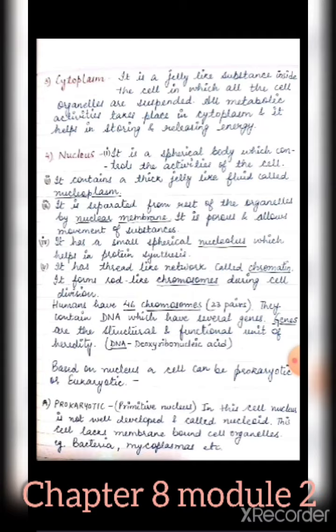There are 23 pairs of chromosomes — that is, 46 chromosomes total — present in humans. The thread-like network known as chromatin becomes thick during cell division and forms rod-like structures called chromosomes. Chromosomes contain DNA and genes, and DNA stands for deoxyribonucleic acid.